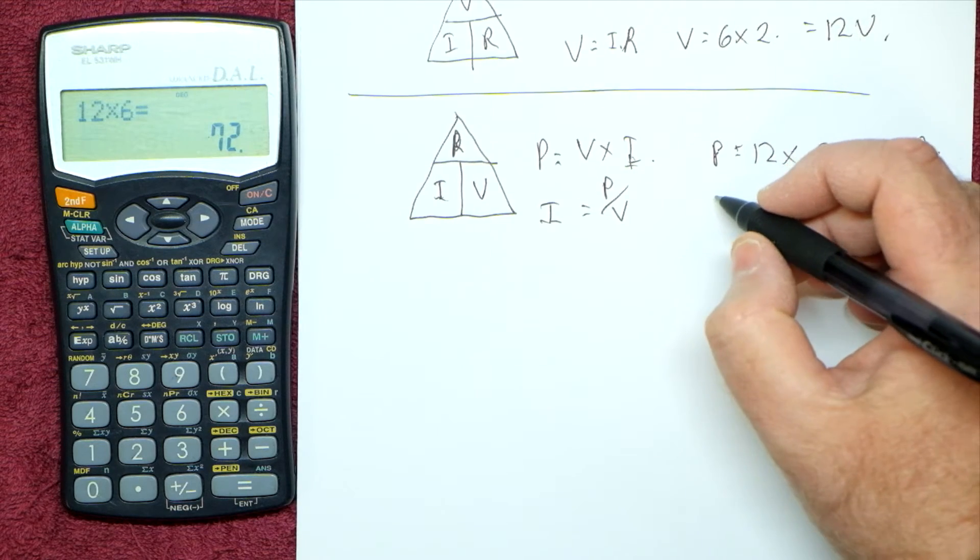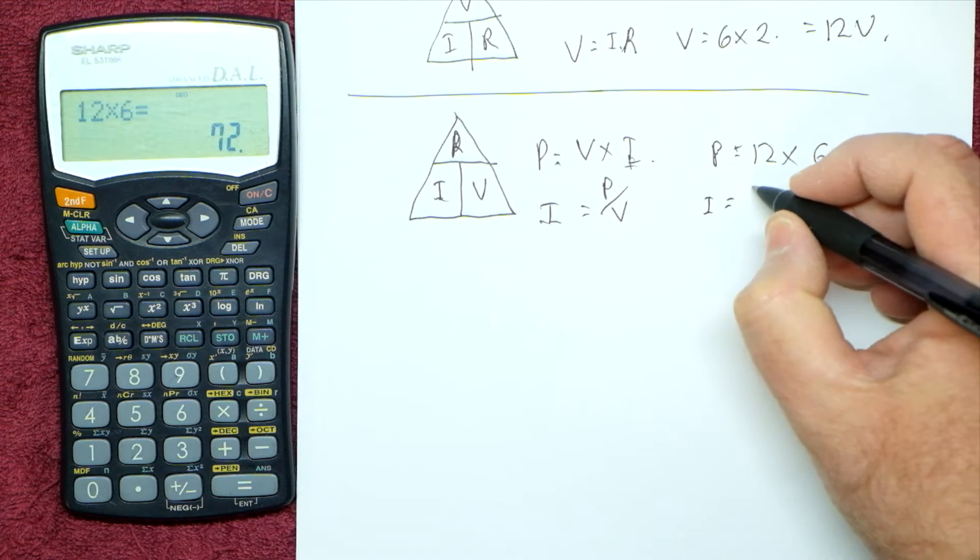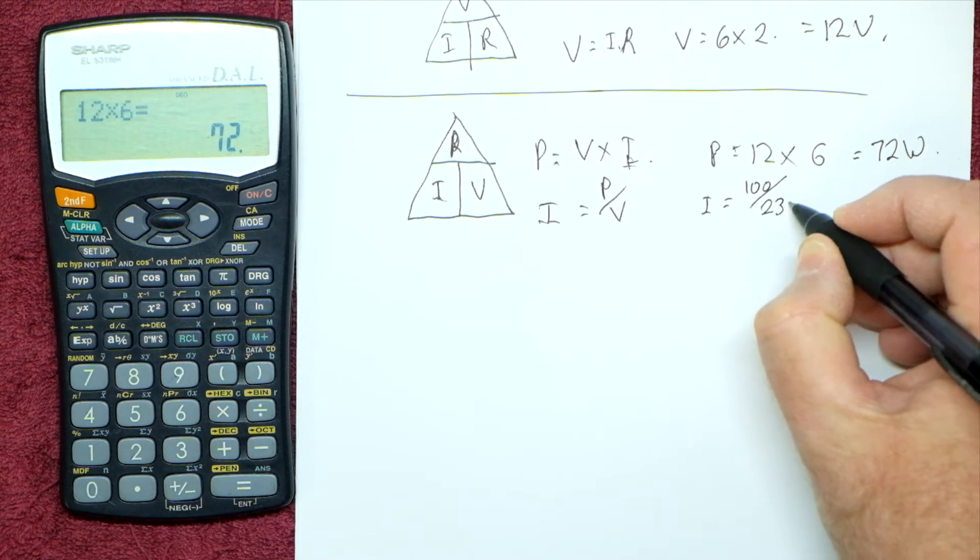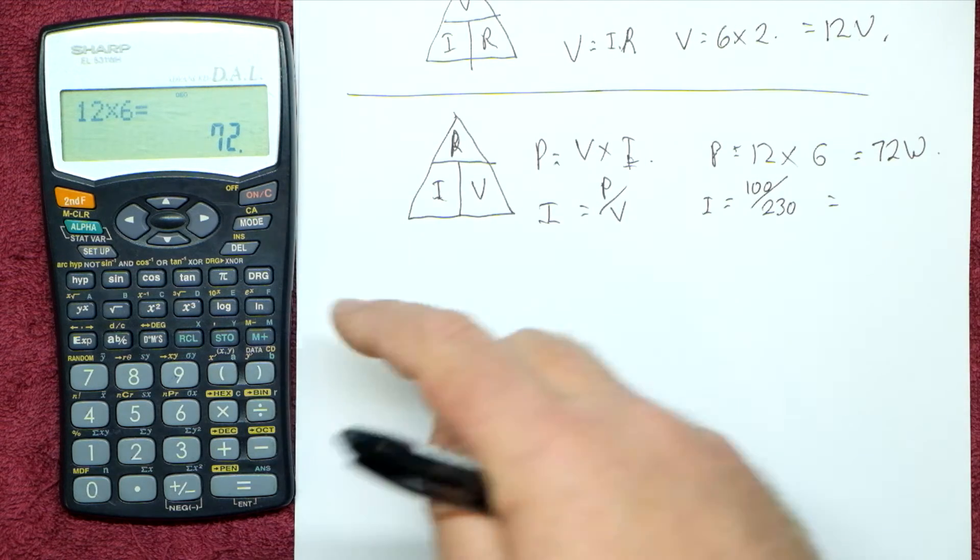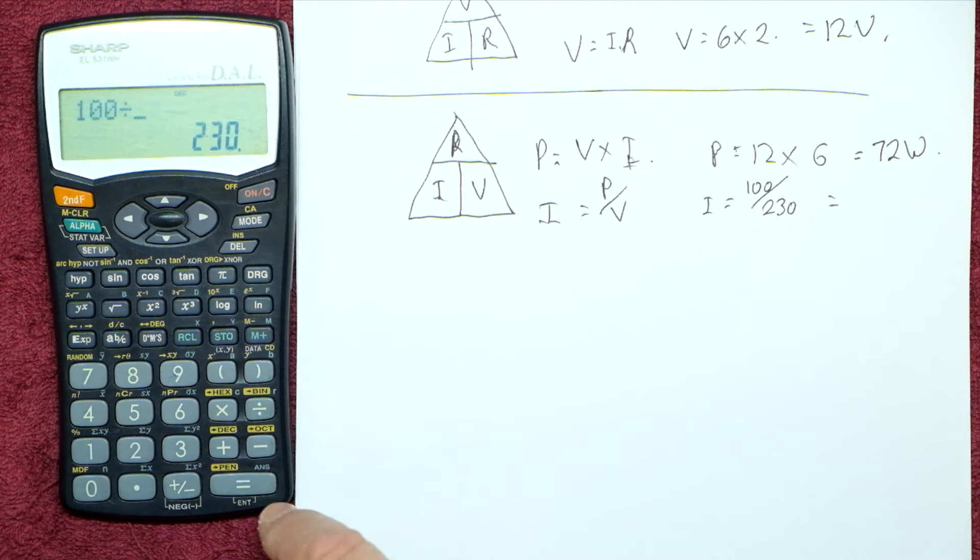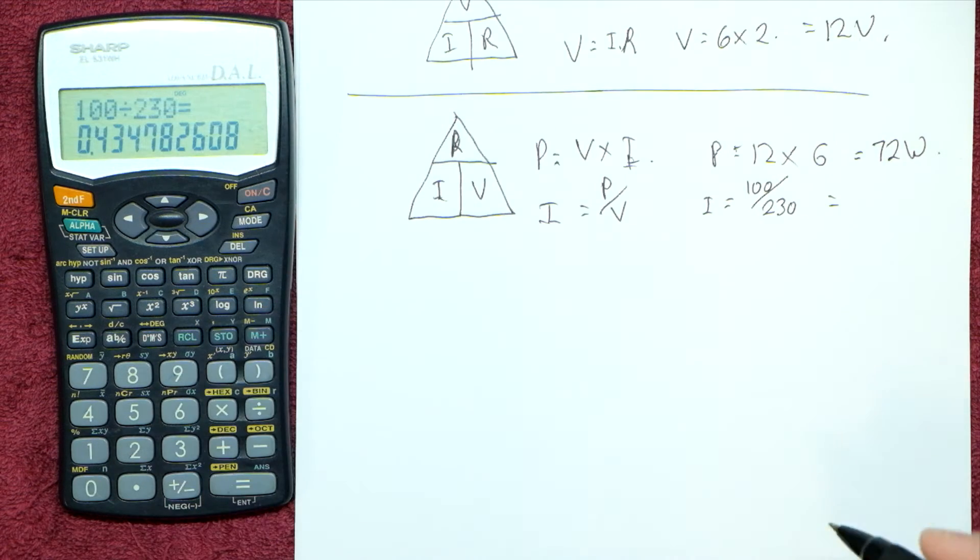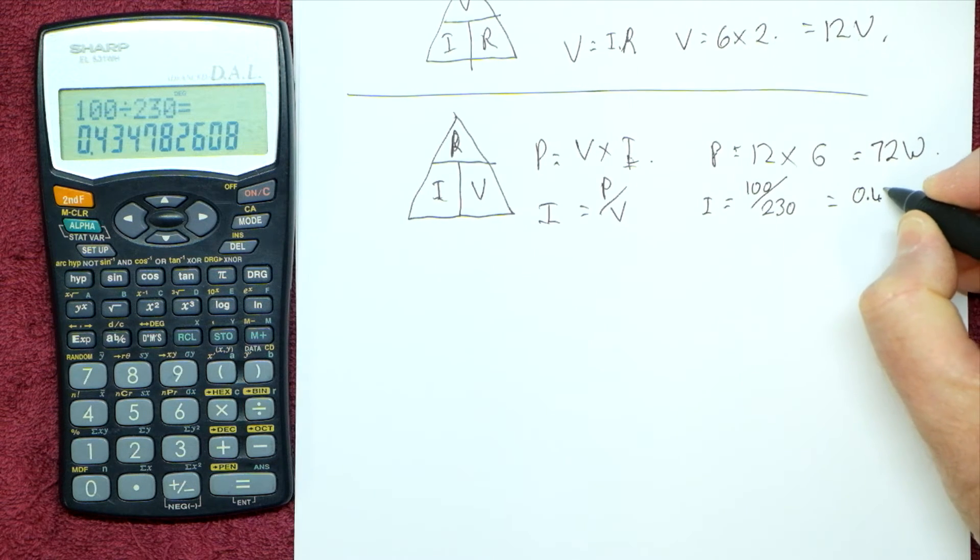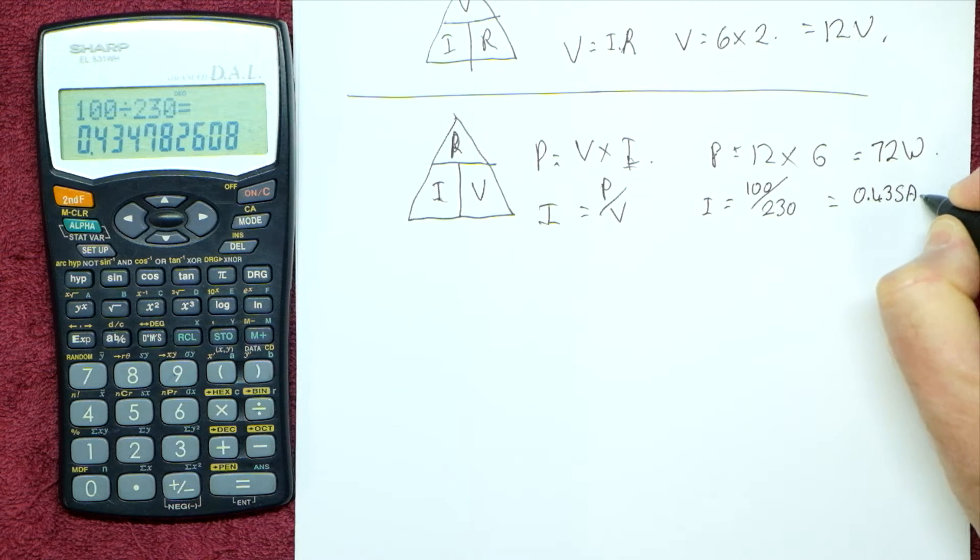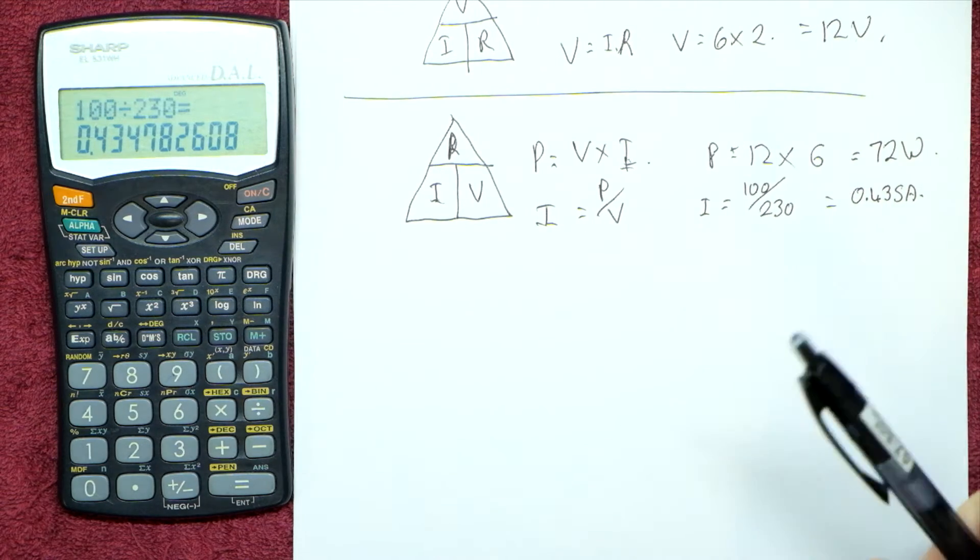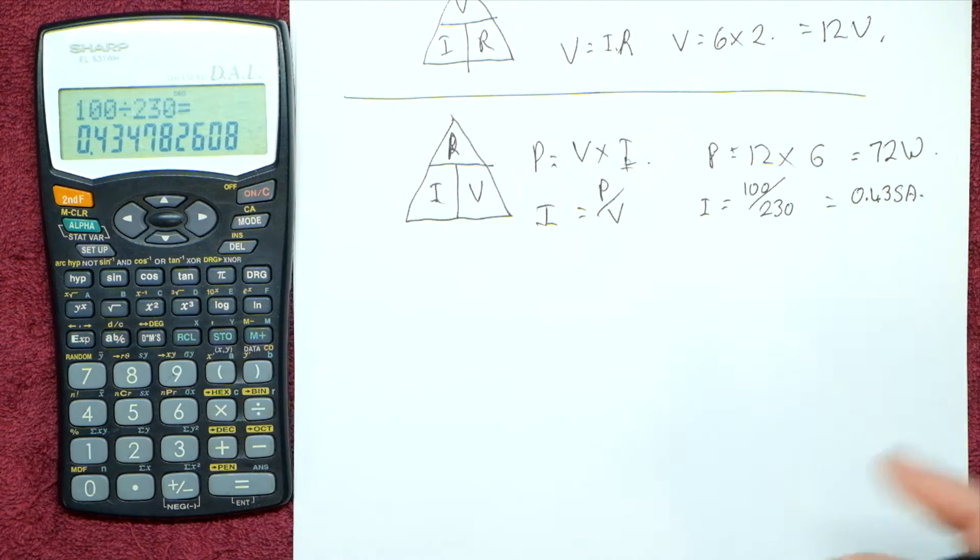So power is 100 watts divided by 230 volts. We're going to take 100 watts divided by 230 volts, and that gives us 0.435. 0.435 amps. Are you getting the idea of how these formulas can actually work together,